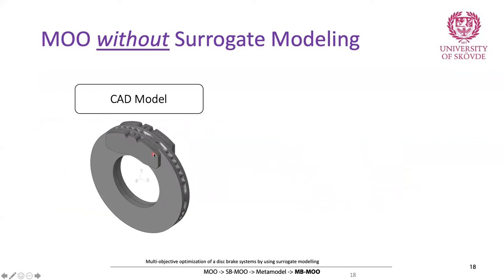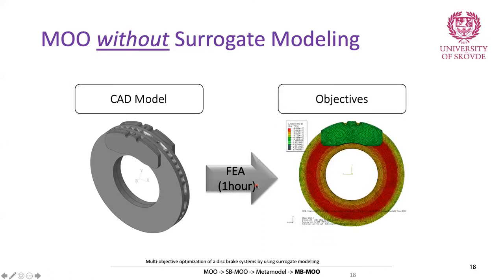The backplate is the thin plate made of cast iron behind the brake pad. We wanted to minimize the thickness of this plate: less thickness means less material, less cost, and increased efficiency in product development. So we minimized the mass of the backplate. We created the CAD model, then ran finite element simulations — each simulation took around one hour. Two of the objectives could be found from the finite element simulations.